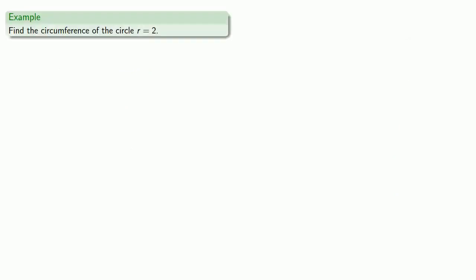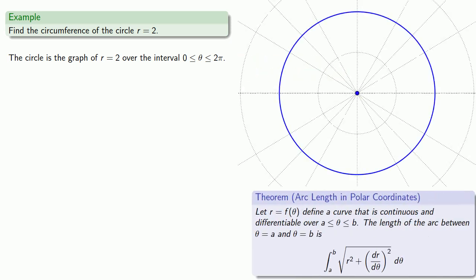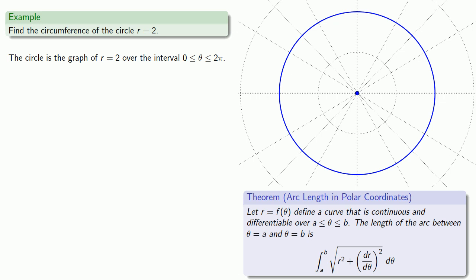So any time we have a shiny new toy in mathematics, one of the things we'd like to do is make sure that it works where we already know the answer. So let's use our formula to find the circumference of the circle r equals 2. So the circle is the graph of r equals 2 over the interval between 0 and 2π. Our formula relies on the derivative of r with respect to θ, so we'll find that, which is 0 because r is a constant.